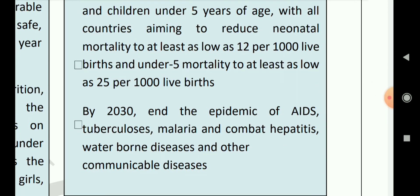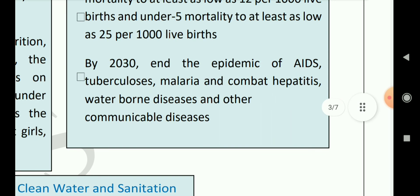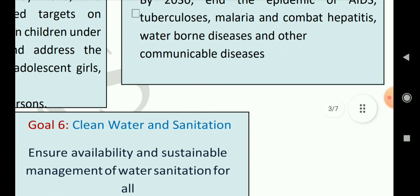The third target under goal 3 is: by 2030, end the epidemic of AIDS, tuberculosis, malaria, and combat hepatitis, waterborne diseases, and other communicable diseases. This means by 2030 we should end the epidemic of many harmful diseases by taking vaccines and accessing good health services.